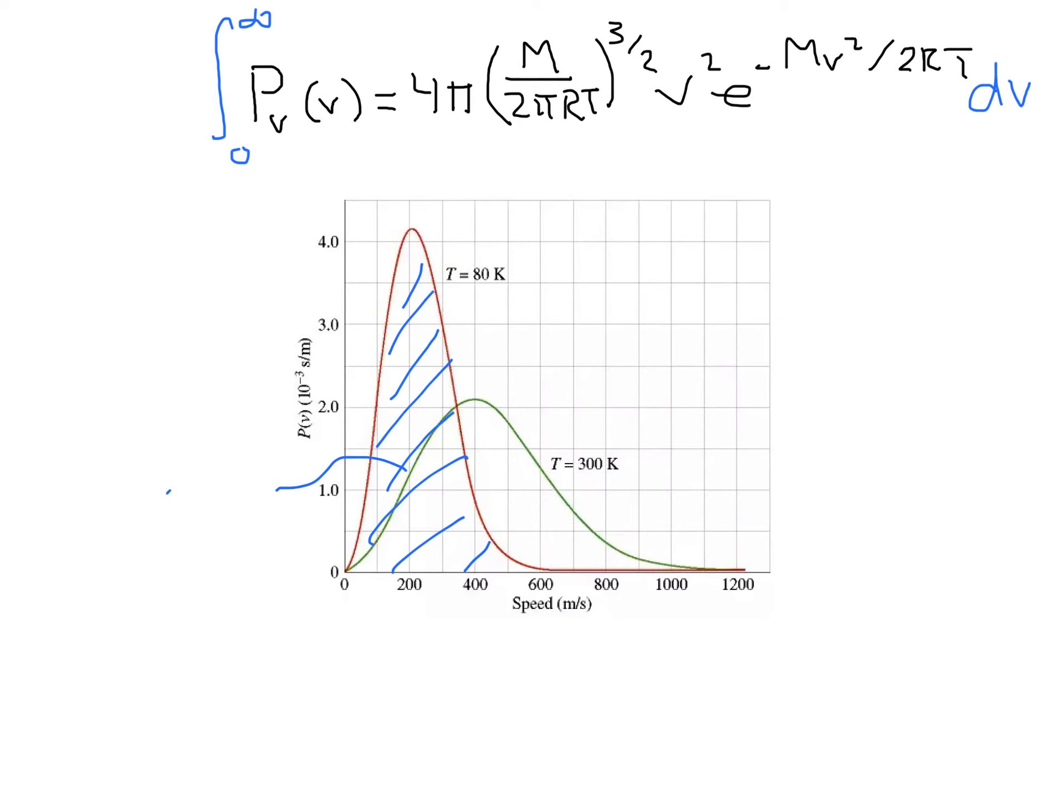Remember that finding the area under a curve is the same thing as integrating over all values. And so, if I integrate the probability distribution from 0 to infinity, that should equal 1, because this is a normalized probability.